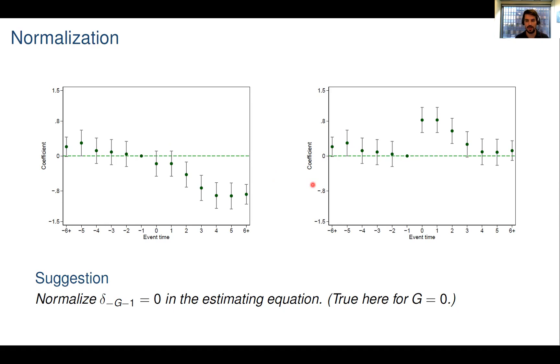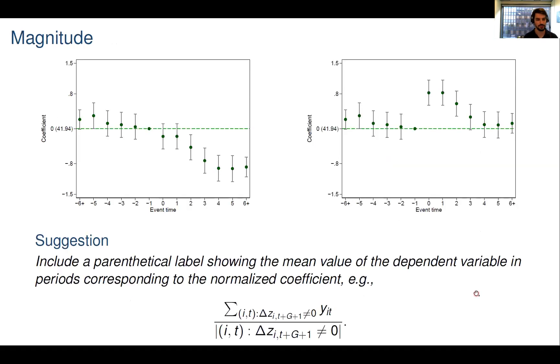Now if I look at these plots, I might like to know something about the economic as well as the statistical significance of my estimates. These plots make that hard to discern partly because they don't convey anything about the overall level of the dependent variable. And so what I mean by that is that the policy effect might be very small but precisely estimated here. Thus it might be statistically significant but not economically meaningful. This brings us to our second recommendation, which is to add a label to your plot that indicates the average value of the outcome corresponding to the normalized coefficient. With staggered adoption and no anticipatory effects, this would simply be the average value of the outcome of interest in the period immediately preceding the event. For example, here, knowing that the outcome takes on a value of around 42 might be helpful in deciding the economic significance of the effect.